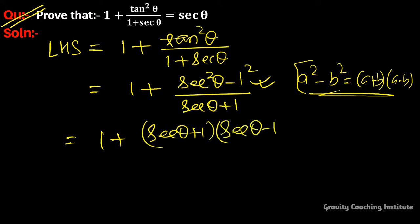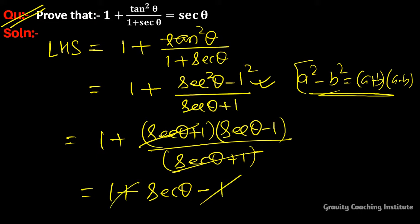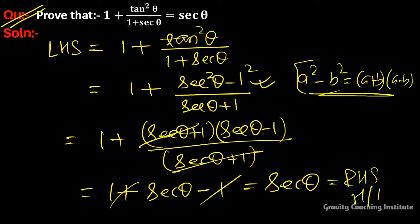With (secθ + 1) in the denominator, we cancel (secθ + 1) from numerator and denominator, leaving secθ - 1 + 1, which equals secθ = RHS. Hence proved.